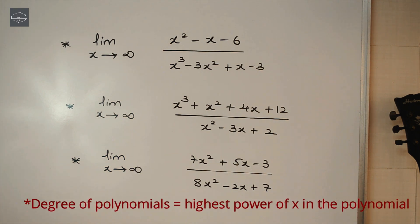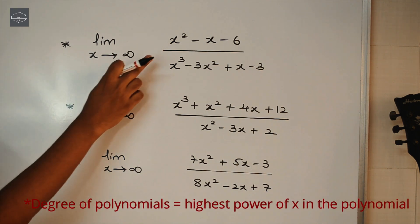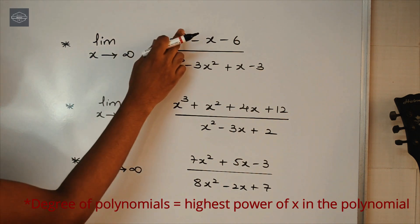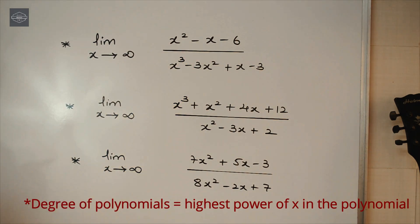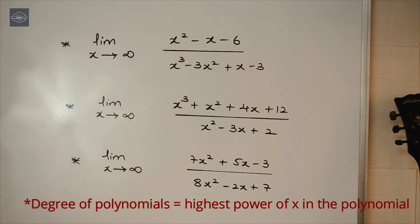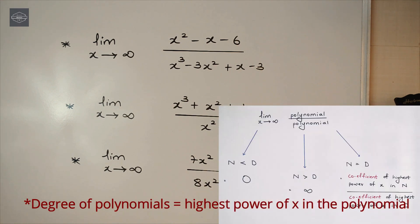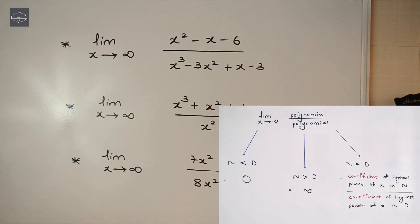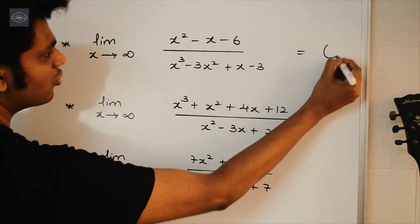For the first one, in the numerator the degree of the polynomial is 2, and in the denominator the degree of the polynomial is 3. So the degree of numerator is less than the degree of denominator, and as per our condition, the answer of the question is 0. So the answer for the first one is 0.